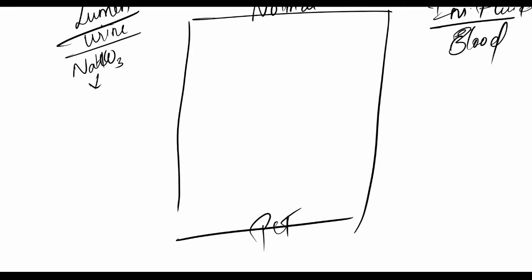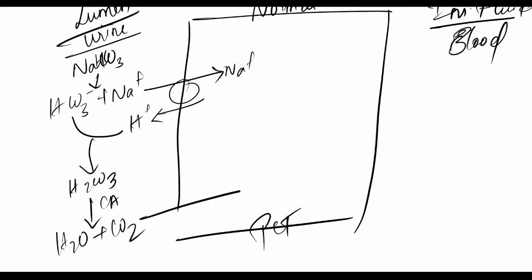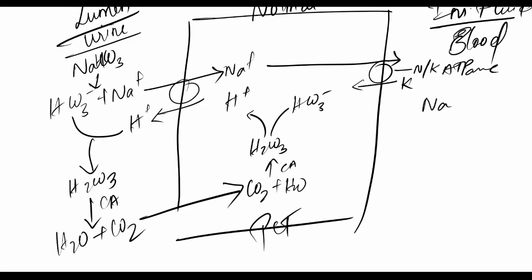It can be written as HCO3 minus plus sodium ion. Sodium is reabsorbed and exchanged with hydrogen. The hydrogen ion combines with HCO3 minus to form H2CO3. Carbonic anhydrase enzyme acts here to give water plus carbon dioxide. Carbon dioxide in the PCT reacts with water to give H2CO3, again in the presence of carbonic anhydrase, which splits into H+ ion plus HCO3 minus ion. The sodium is then reabsorbed into the body.